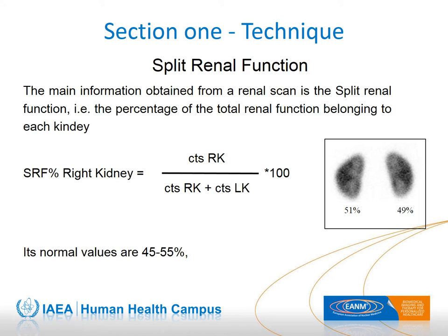In the lower left-hand corner, the reference values can be seen. The split renal function obtained with DMSA is nowadays the reference value for all other methods.